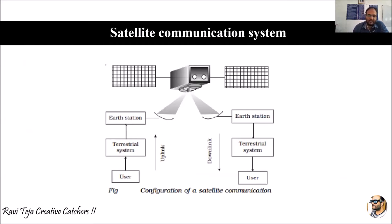If you see the diagram carefully, it consists of two users. Each user is connected to a terrestrial system, and this terrestrial system is connected to an earth station. An earth station is a place where we communicate with satellites moving in orbit above the earth. The satellite is then connected with another earth station located at another part of the country, which is again connected to a terrestrial system and another user.